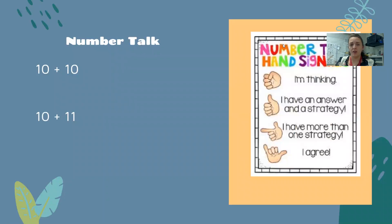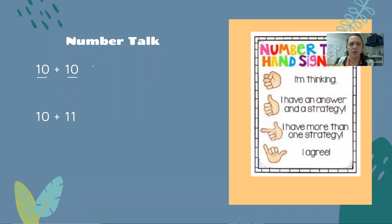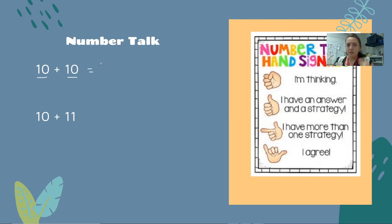Let's start out with a number talk. I see a doubles fact here: 10 plus 10. This is a doubles fact because it's adding the same number twice. Number talks always happen in our heads — we do the math without our fingers and without a pencil. So 10 plus 10 we should be able to do in our heads and get 20.